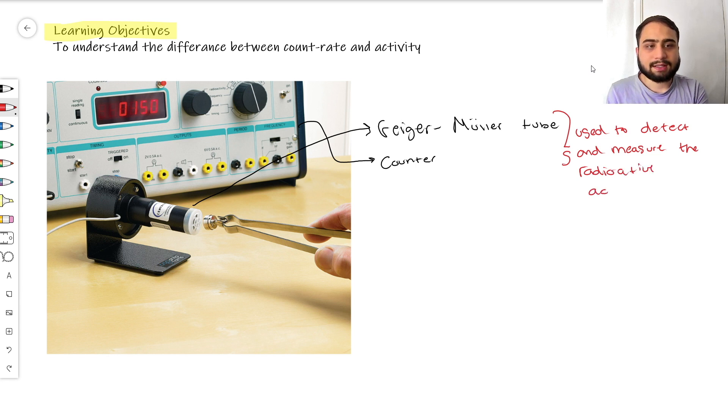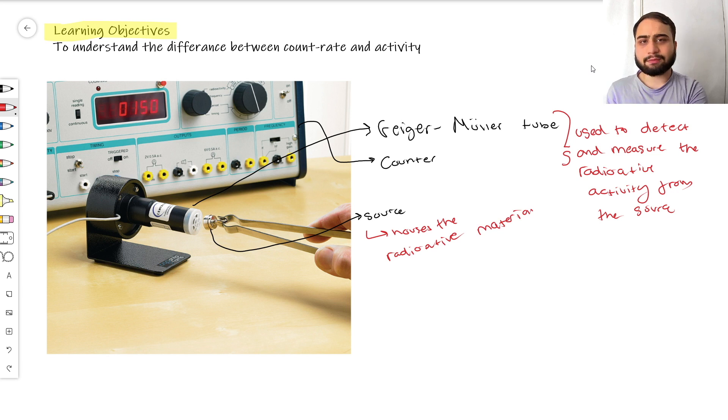They measure the radioactive activity from the source. The source houses the radioactive material, but there's a big distinction between count rate and activity.